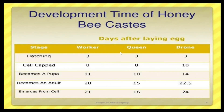To summarize development times: for a worker, hatching takes 3 days, the cell is capped at 8 days, it becomes a pupa at 11 days, and it becomes an adult at 20 days.